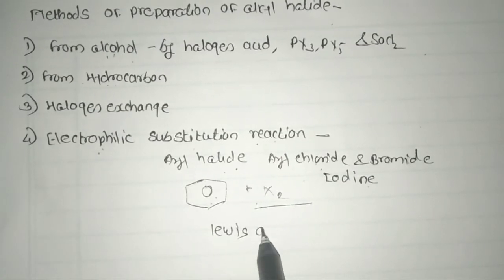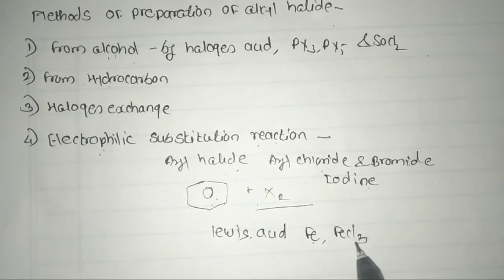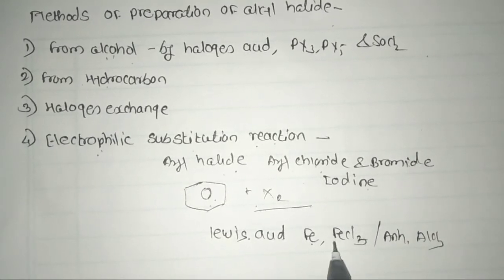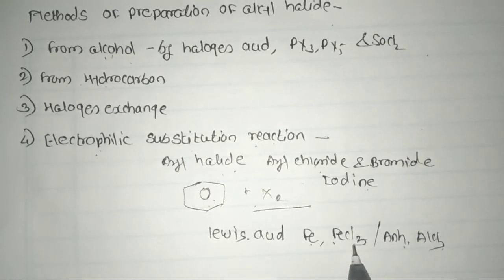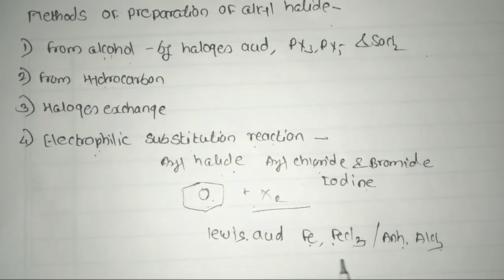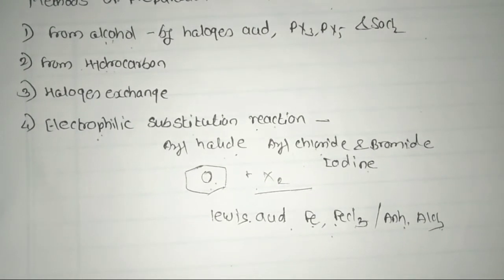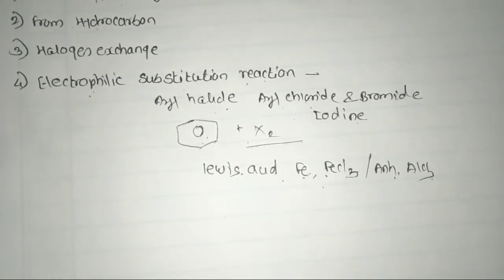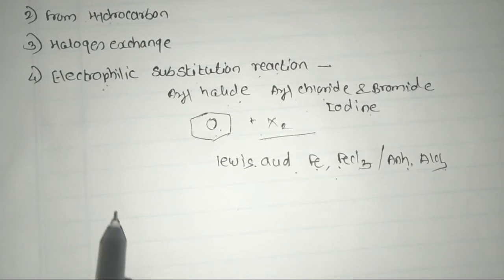The suitable Lewis acid used in this electrophilic substitution reaction is ferric chloride (FeCl₃) or anhydrous AlCl₃. These Lewis acid catalysts are used in the reaction to prepare aryl halides, including bromine compounds.